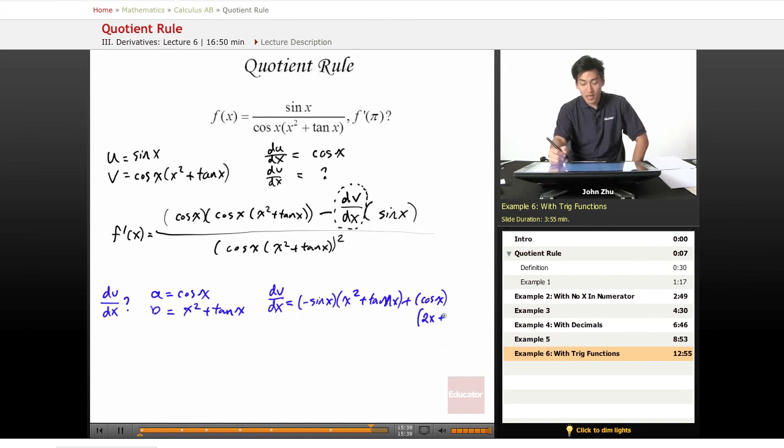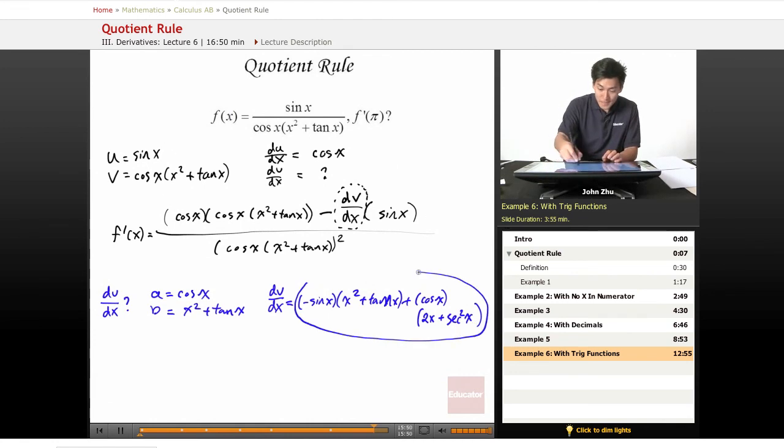So 2x plus whatever the derivative of tangent of x is, and if we can remember that's secant squared of x. Then we just take this expression and plug it in right here.